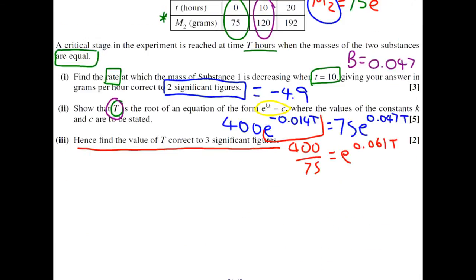To give this expression, we just do 400 divided by 75 on our calculator, and we get the answer that e to the 0.061t equals 16 over 3. So k equals 0.061, and c equals 16 over 3. They're the unknown constants from the question.